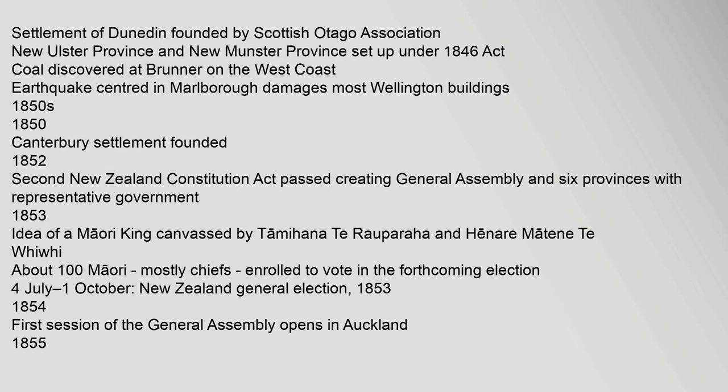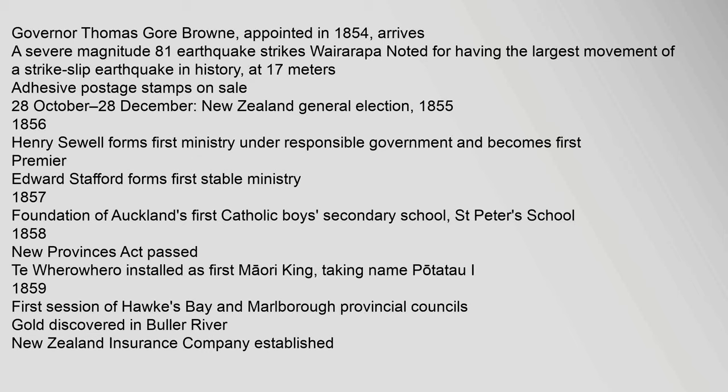1853: Idea of a Maori king canvassed by Tamihana Te Rauparaha and Henare Matene Te Fifi. About 100 Maori, mostly chiefs, enrolled to vote in the forthcoming election. 4 July – 1 October: New Zealand general election. 1853–1854: First session of the General Assembly opens in Auckland. 1855: Governor Thomas Gore Brown arrives. A severe magnitude 8.1 earthquake strikes Wairarapa, noted for having the largest movement of a strike-slip earthquake in history at 17 metres. Adhesive postage stamps go on sale.